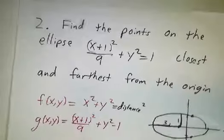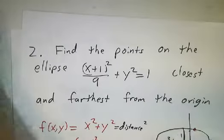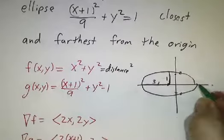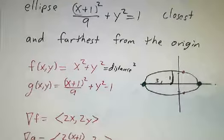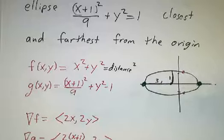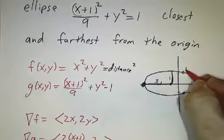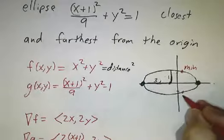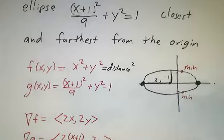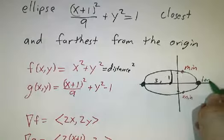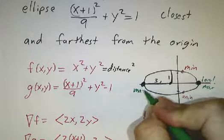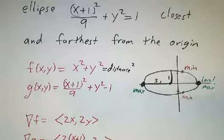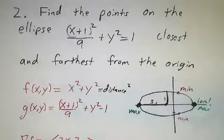So going back to our picture, let's put those in green. So what we have is four critical points. We have a minimum, a minimum, a local max, and an absolute max. And there we go. We found the closest and farthest points by using Lagrange multipliers.